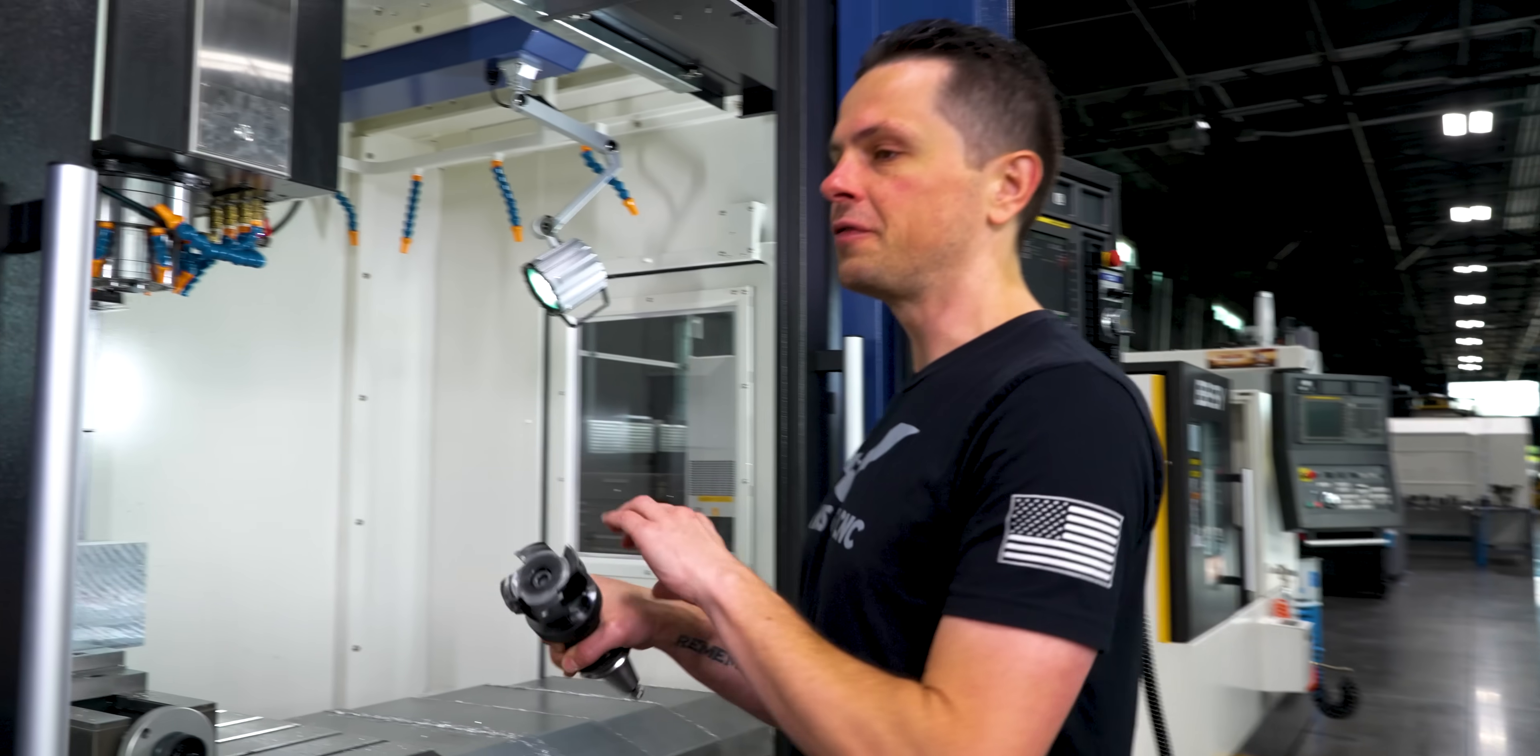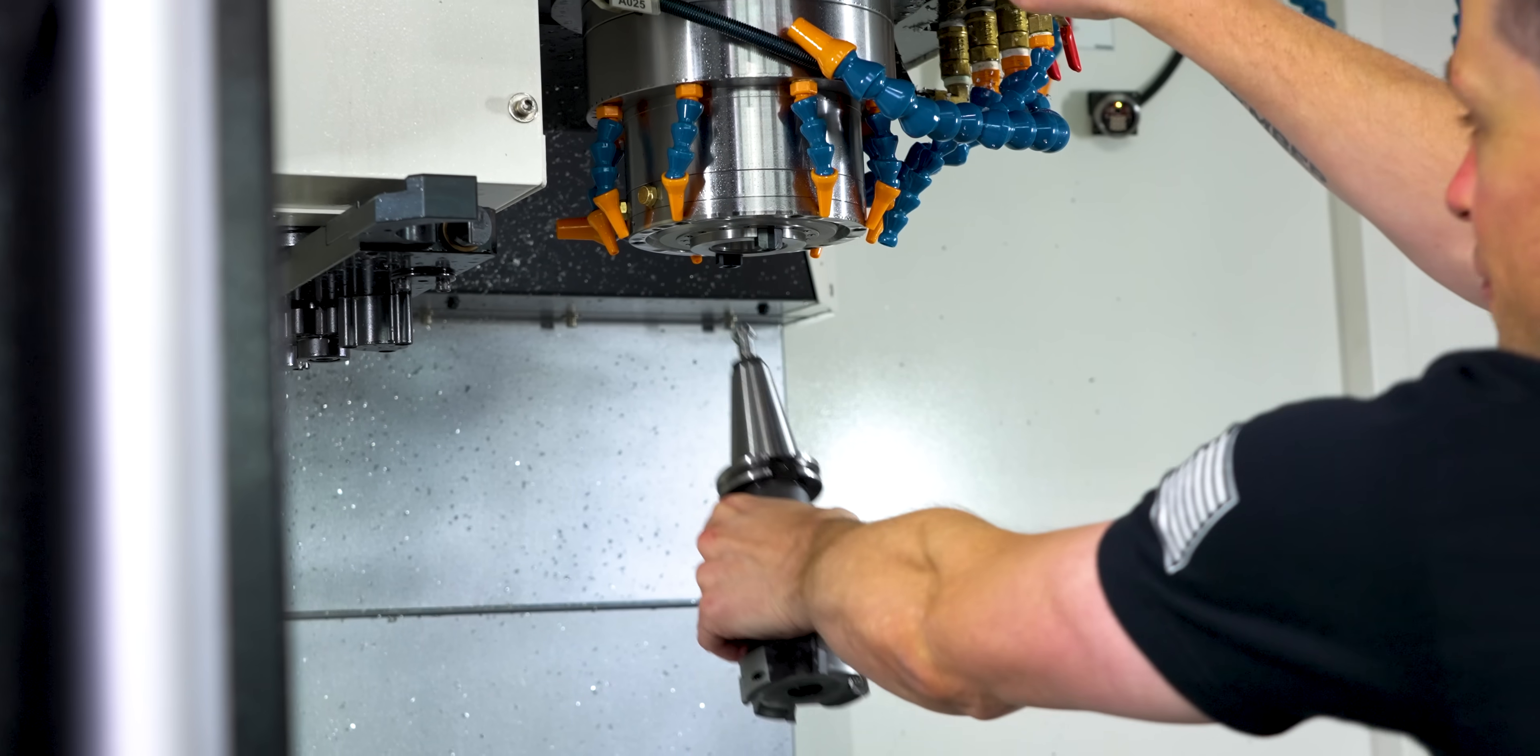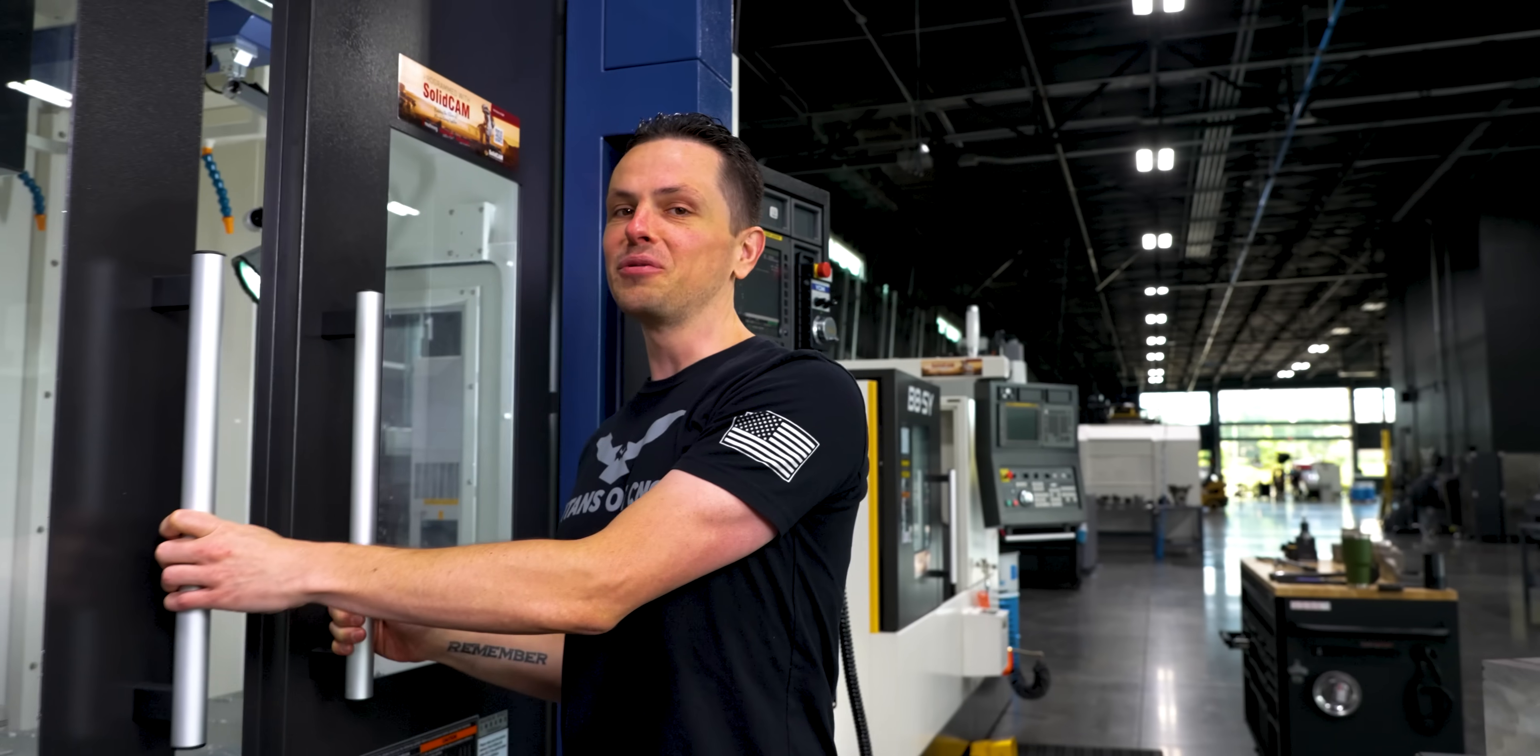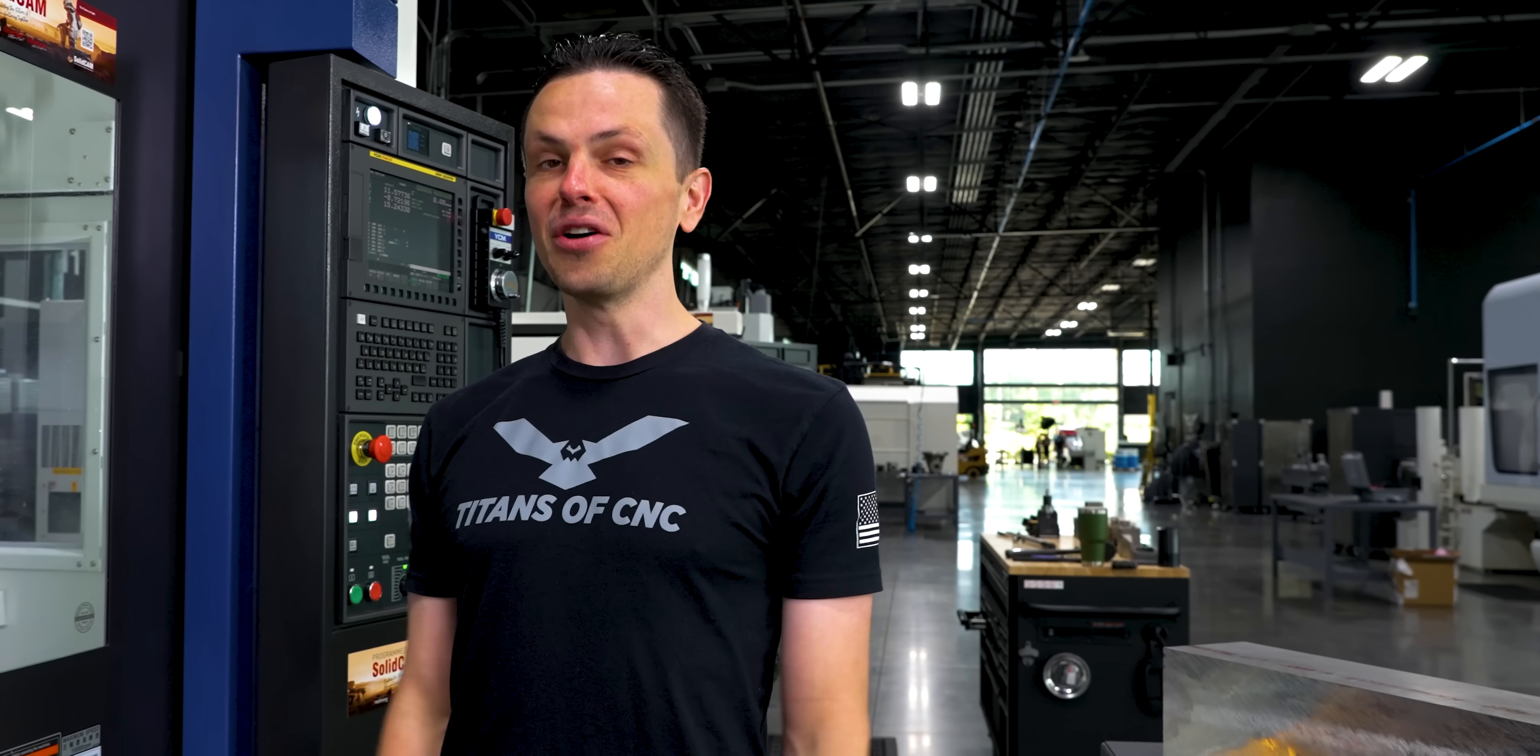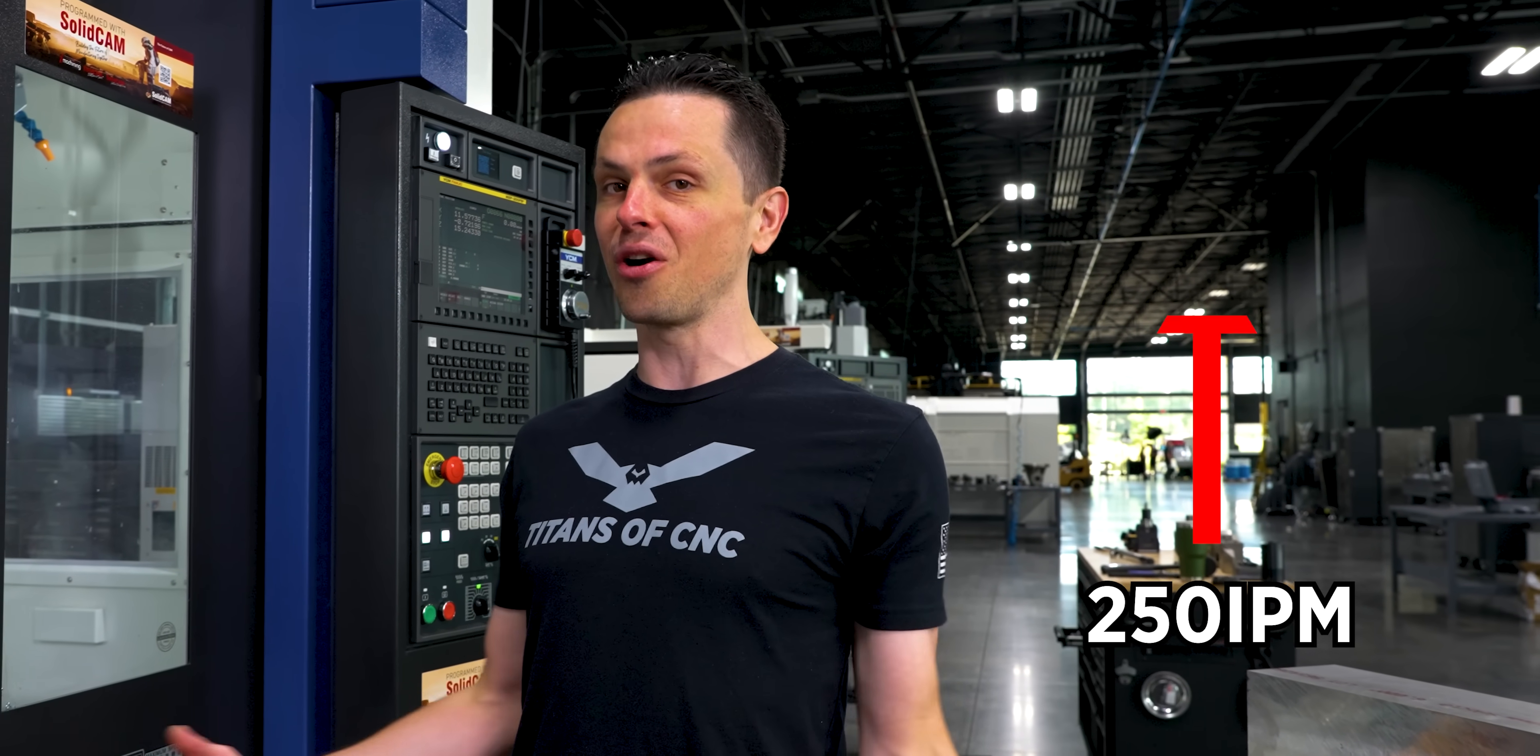So I programmed this at 250 inches a minute, which sounds really fast to me. But when I talked to Titan about it, he said it was way too slow. He wants to go 600 inches a minute, which honestly scares the hell out of me. So we're going to start at 250 inches a minute and work our way up to 600. Let's see how it goes.